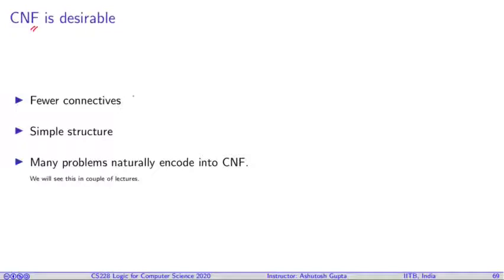First reason, it has very few connectives. You have conjunction, disjunction, and not. Very simple structure - you have a conjunction and they are disjunction over literals. Finally, a lot of problems can be naturally encoded into CNF.